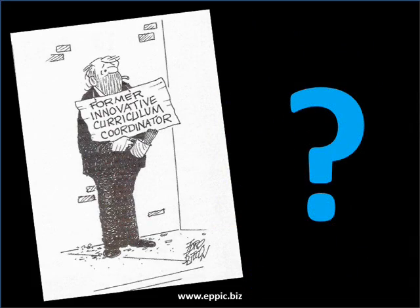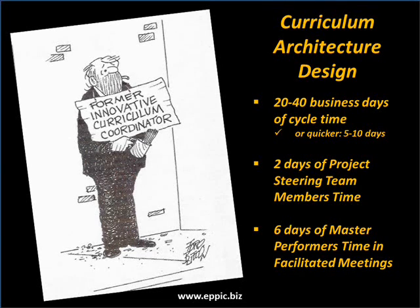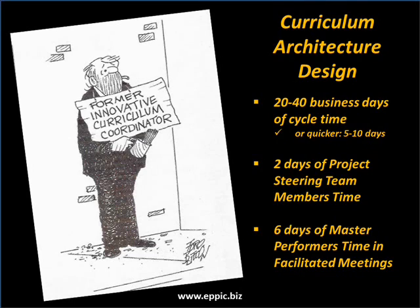The typical questions about curriculum architecture design: how long does this take? The typical project is 20 to 40 business days, but can be done much quicker — as quick as 5 days, or more closely to 10 days. A project steering team may be involved for upwards of 2 full days across 4 different meetings. This provides them with command and control opportunities to make sure they get exactly what they need and what will have an impact on performance. They make the business decisions inherent in a curriculum architecture design project, not the instructional designers.